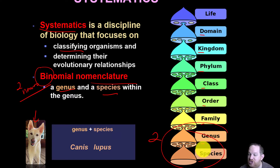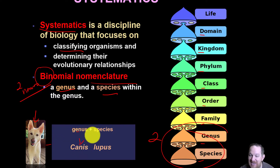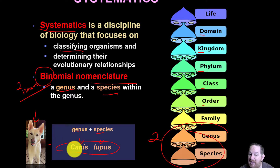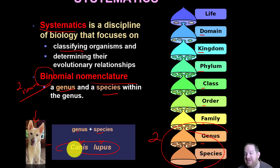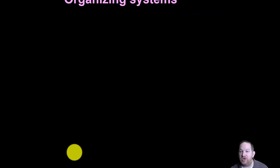So we always use the genus and species to classify an organism. Grace's genus is Canis, her species is lupus, so her scientific name is Canis lupus. For humans, our genus is Homo, our species is sapiens, so of course we are Homo sapiens. This is how we classify organisms.